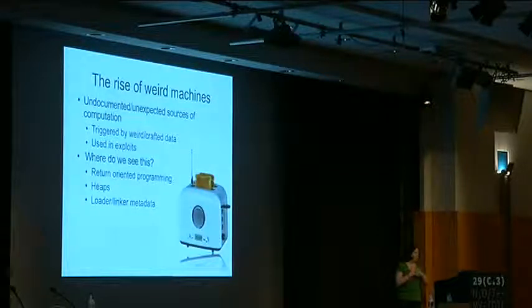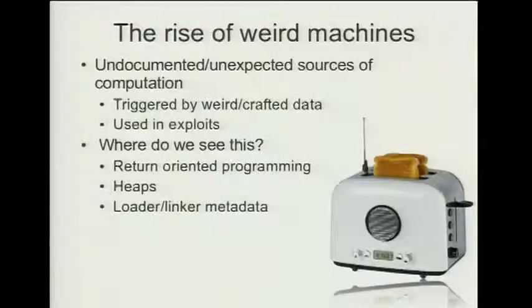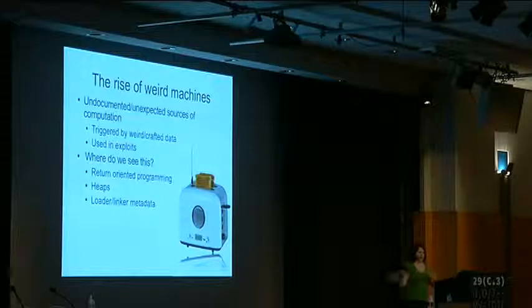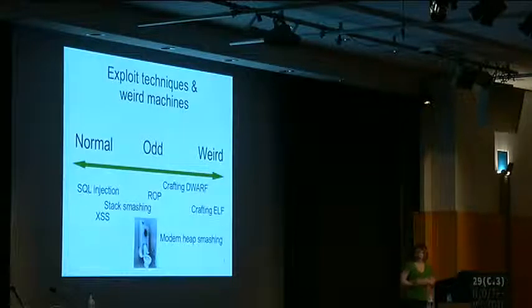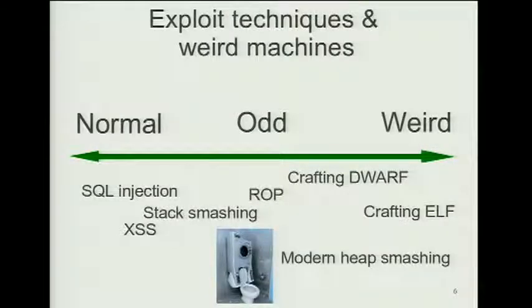In heap crafting attacks — anything that involves getting the heap into a predictable state — that's a weird machine. Trying to make allocations and freeze so that the so-called randomized heap ends up more predictable, and then the attack can continue, perhaps overriding some function address. And then what we're looking at is linker-loader metadata, and the weird machines we find just by how the metadata is processed. There are many forms of weird machines: trivial ones like SQL injection; combo ones like ROP; and really weird stuff like crafting ELF, heap smashing, or DWARF.